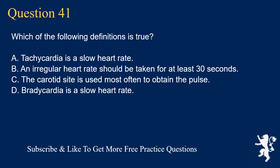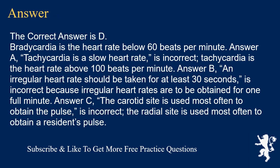Question 41. Which of the following definitions is true? A. Tachycardia is a slow heart rate. B. An irregular heart rate should be taken for at least 30 seconds. C. The carotid site is used most often to obtain the pulse. D. Bradycardia is a slow heart rate. The correct answer is D. Bradycardia is a heart rate below 60 beats per minute. Tachycardia is the heart rate above 100 beats per minute. Irregular heart rates are to be obtained for one full minute, not 30 seconds. The radial site, not the carotid, is used most often to obtain a resident's pulse.